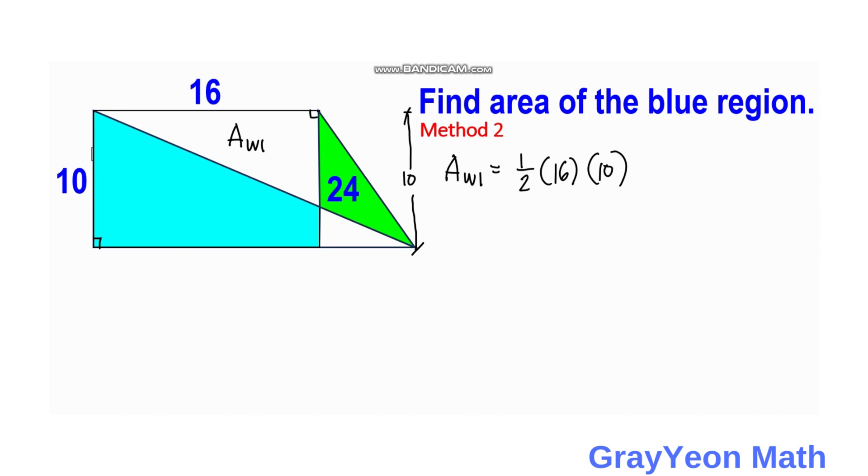And since we are already concerned about the area of W1, then we have to subtract this 24. So we have area of W1 equal to 8 times 10, which is 80, minus 24. So area W1 is actually equal to 56.